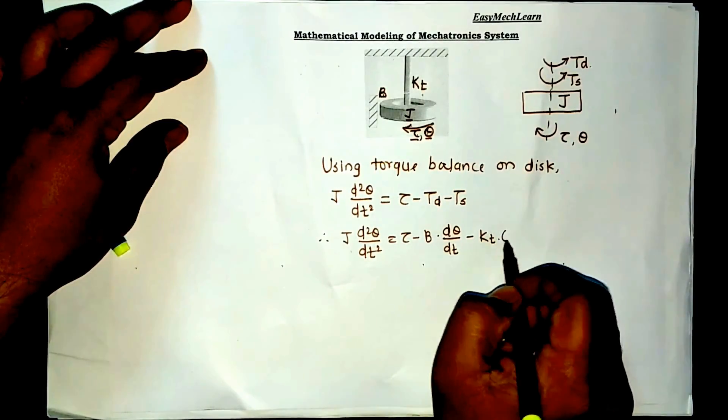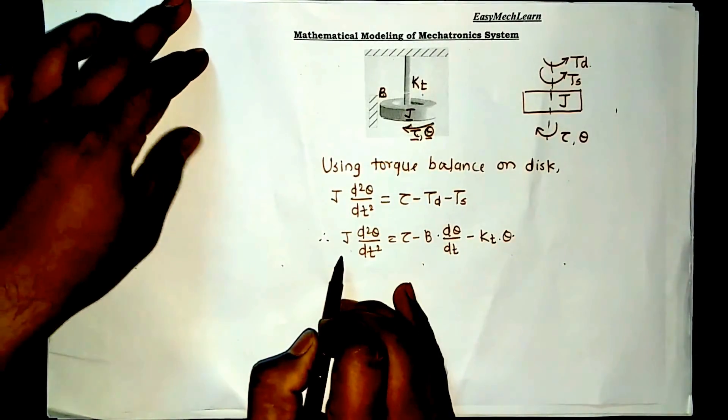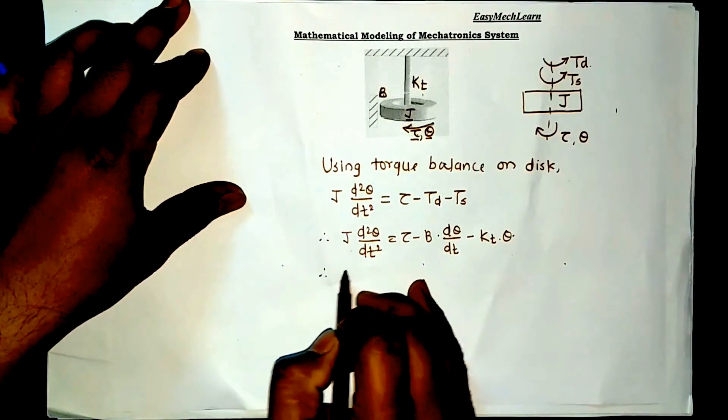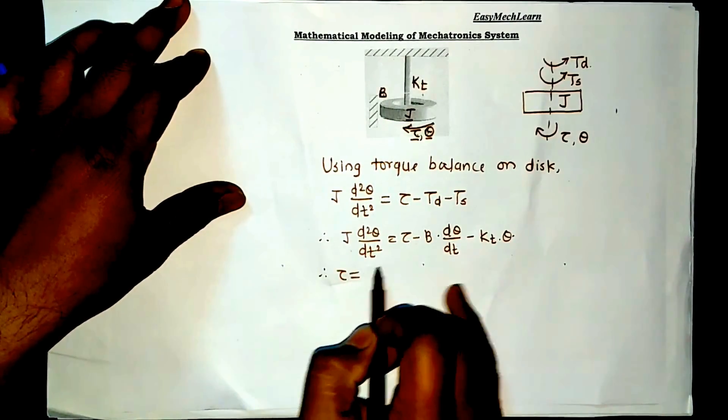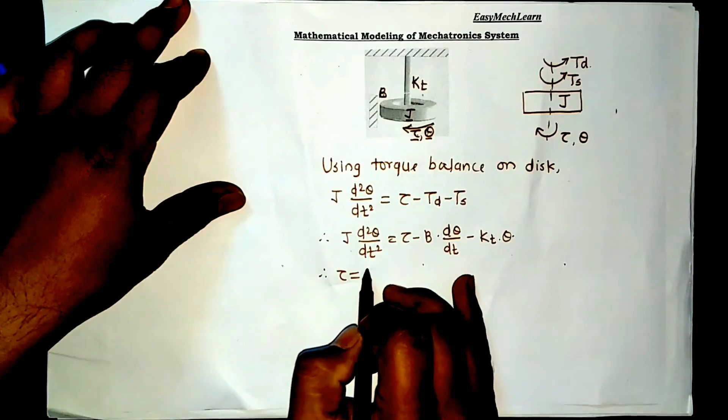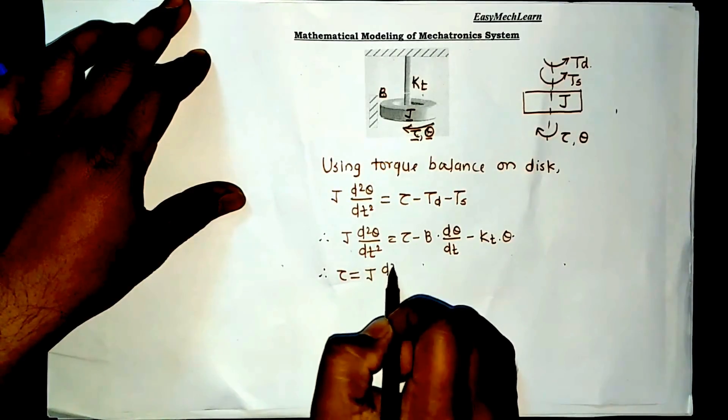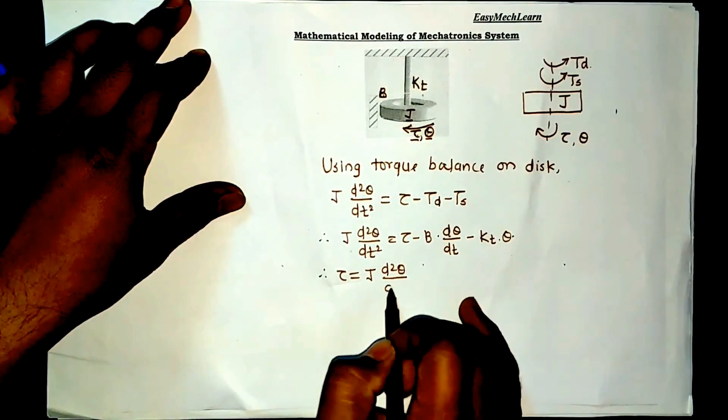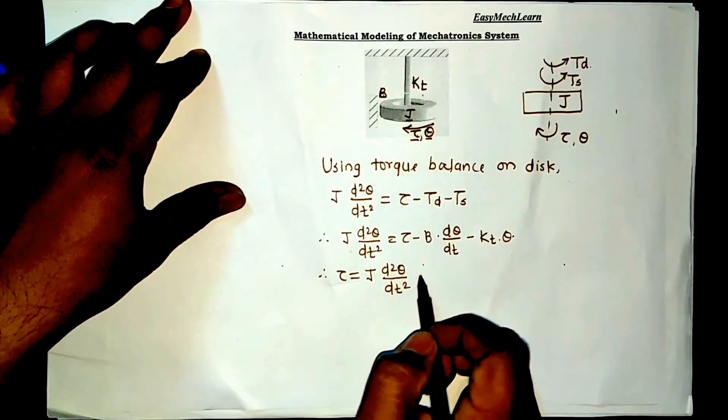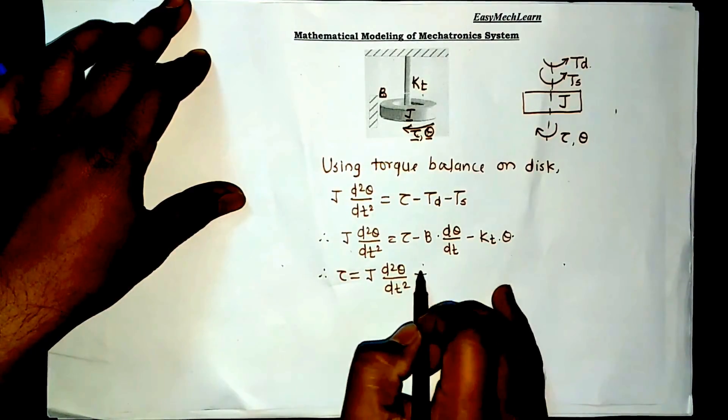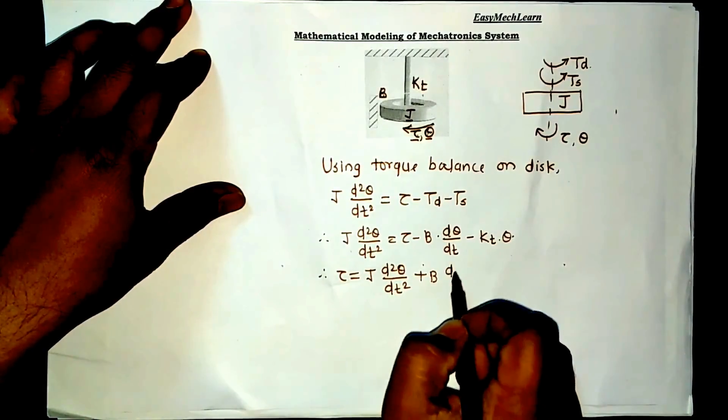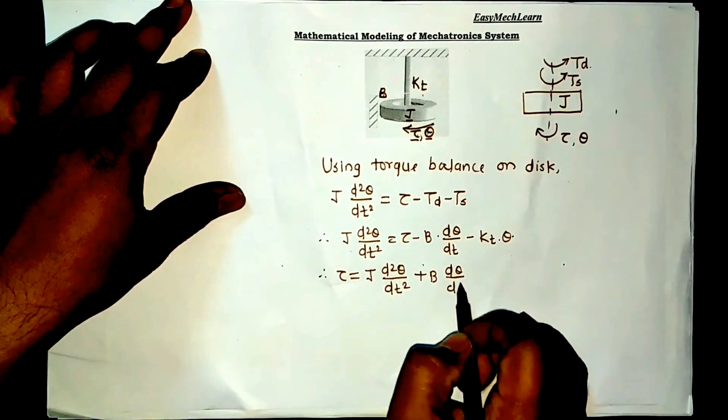Simplify this equation, then we get tau is equal to J d2 theta divided by dt2 plus B d theta by dt plus Kt theta. This is the second order differential equation.